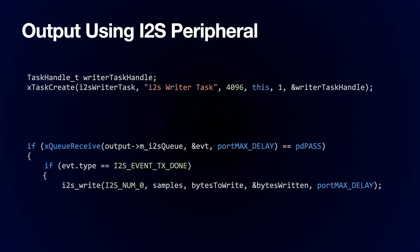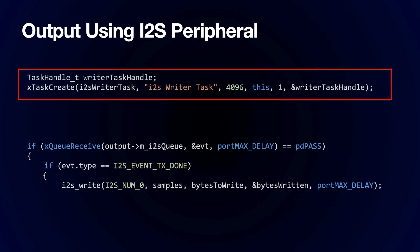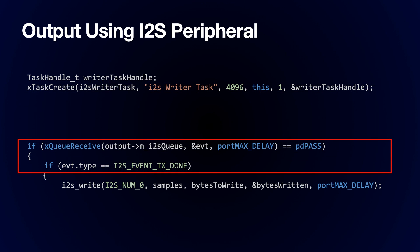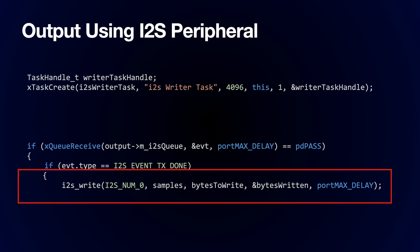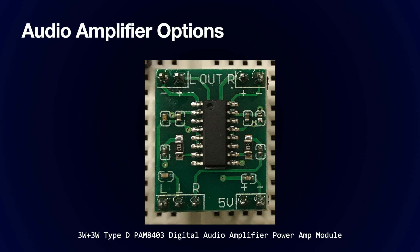Sending data to the I2S peripheral is straightforward and follows the same pattern as before. We create a task, and within our task we wait for the peripheral to request more data, then write more data to the peripheral for output. The output from the DACs won't be powerful enough to drive a speaker directly, so you'll need an amplifier. I'm using a small breakout board with an audio amplifier, but you can easily build a simple amplifier from discrete components.